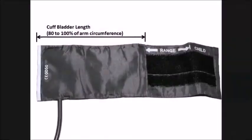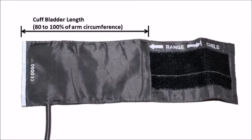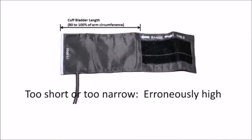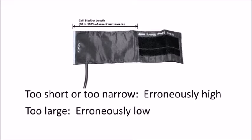When a cuff fits appropriately, the inflatable bladder should cover about 80% of the circumference of the patient's arm. Using a cuff that is too short and narrow results in erroneously high blood pressure measurement. When a cuff is too large, blood pressure measurements will be erroneously low.